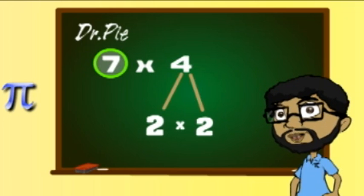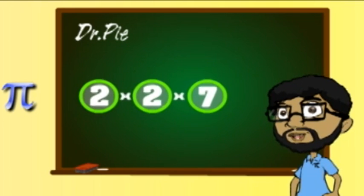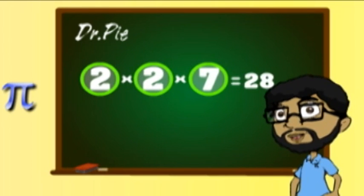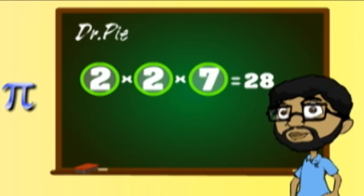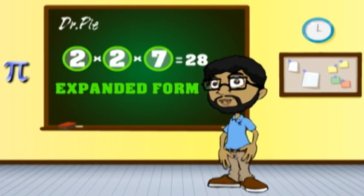Do not forget to circle the 2's. Multiply all the circle numbers — you will not lose. 2 times 2 times 7 is 28. If you got that then you're doing great. This is called expanded form — get this right and toot your horn.